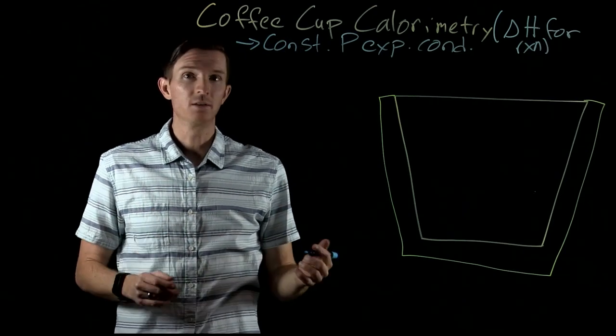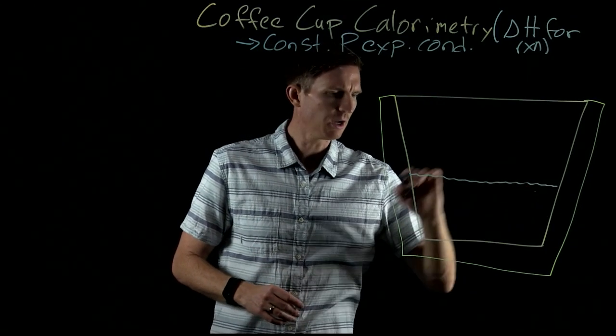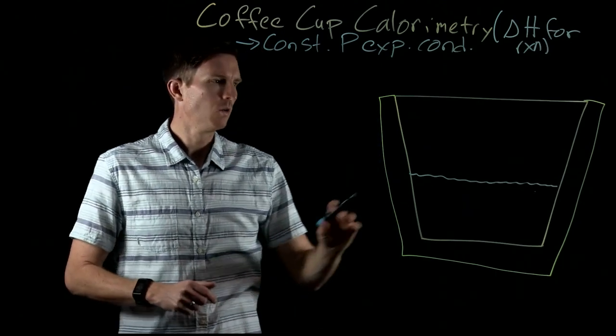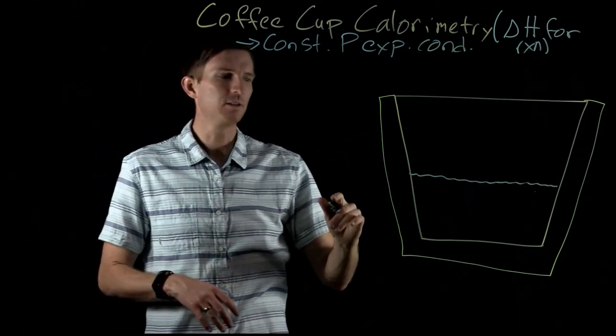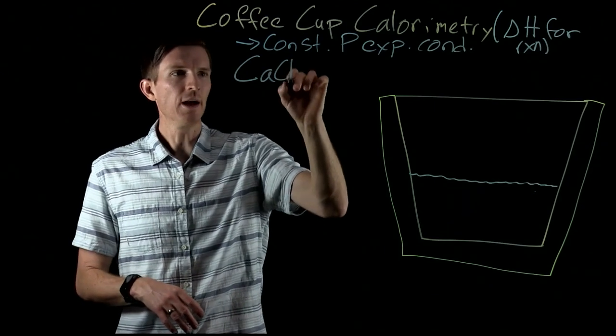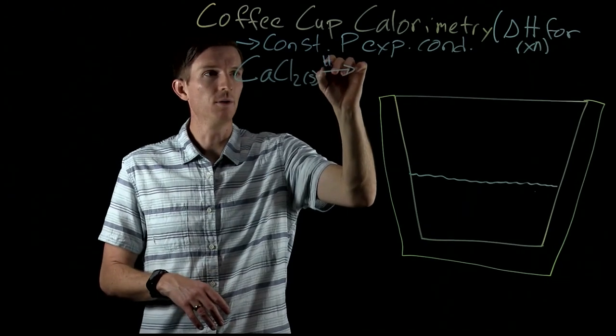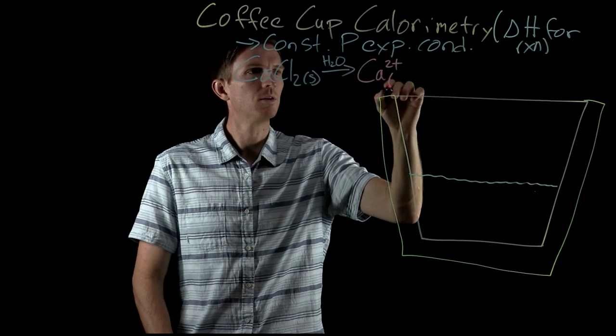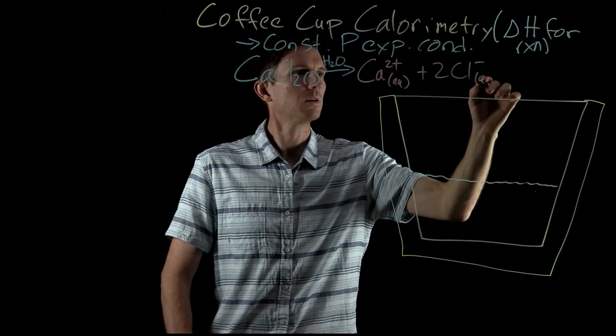Now how are we going to look at the relationships that exist here? So we have inside of our coffee cup some solution. Now in that solution we have maybe reactants, maybe we just have water. I'm going to use the example of just water here. Now let's say we have calcium chloride solid and what we're going to do is we're going to add it into water. Once we do that we're going to get calcium ions and two chloride ions.